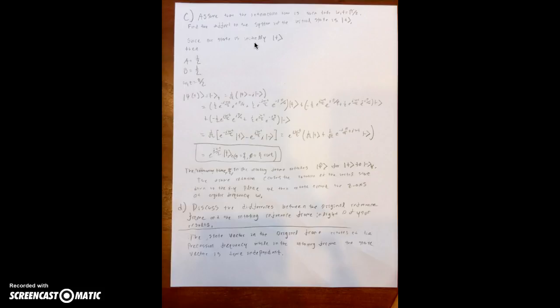The interaction time of pi over 2 in the rotating frame rotates our state vector from spin up on the z-axis to spin down on the y-axis. Using that information, we can set our state vector equal to spin down on the y-axis and then plug in our state vector that we found, and we end up with this.